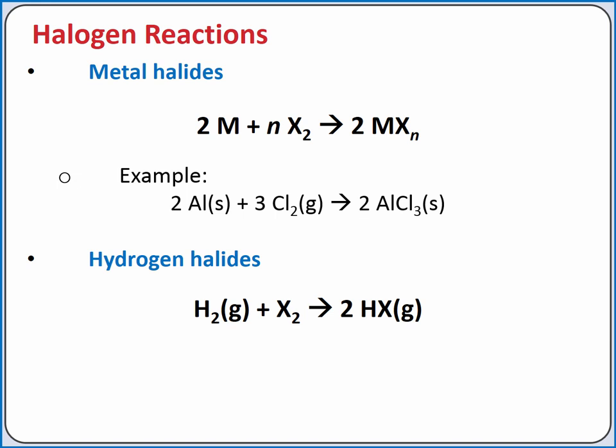Hydrogen gas can also react with a halogen to produce hydrogen halides. In this reaction, a covalent bond is formed between the hydrogen and halogen. For example, hydrogen gas reacts with chlorine gas to produce HCl gas.